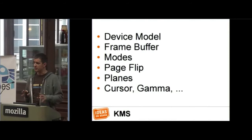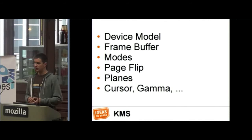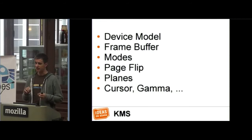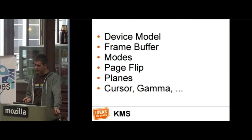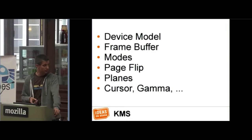The KMS API — Kernel Mode Setting — is really about modeling the device and exposing a model of the device to applications, handling frame buffers, and handling modes. One important operation to understand is the page flip operation, which is basically taking a new frame buffer and sending it out to the screen — you flip from one frame buffer to a second one. There are also things like planes, also called overlays, as well as cursor handling which can be hardware accelerated.